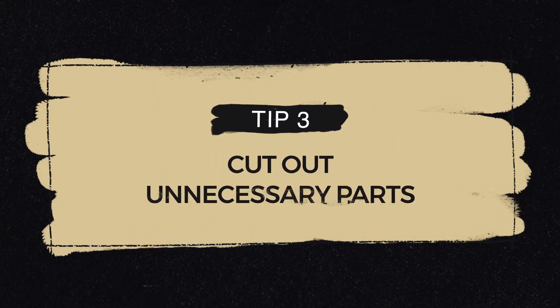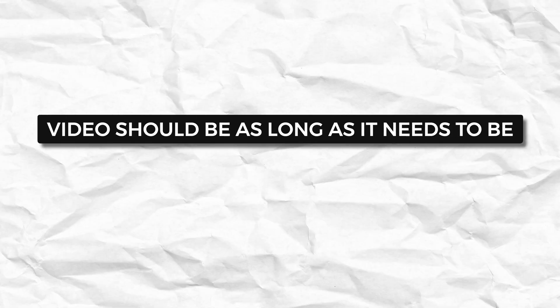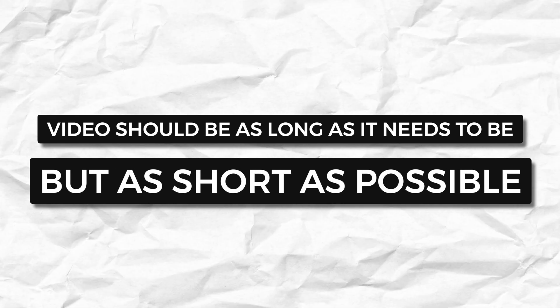Tip number three is cutting out the unnecessary parts. Really keep what's important and remove the rest. Your video should be as long as it needs to be, but as short as possible. Things like long pauses between sentences, and filler words. Now to determine which part to remove, I recommend viewing your video from the perspective of a viewer — imagine it as if it were someone else's video and consider what you would trim. If you have someone who can watch it with you, ask for their feedback and observe their reaction, paying attention to when they become bored or tired. That's when you'll know what to cut out.